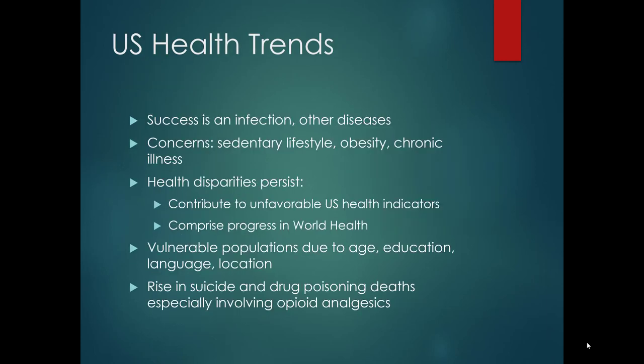Trends in the U.S. include successes in infectious disease campaigns as well as other diseases. However, there continue to be concerns about sedentary lifestyle, obesity, and chronic illness. Health disparities continue to persist and contribute to unfavorable U.S. health indicators, and also comprise part of the progress measures of the World Health Organization. Vulnerable populations due to age, education, language, and location continue to exist, along with a rise in suicide and drug poisoning deaths, especially those involving opioid analgesics.